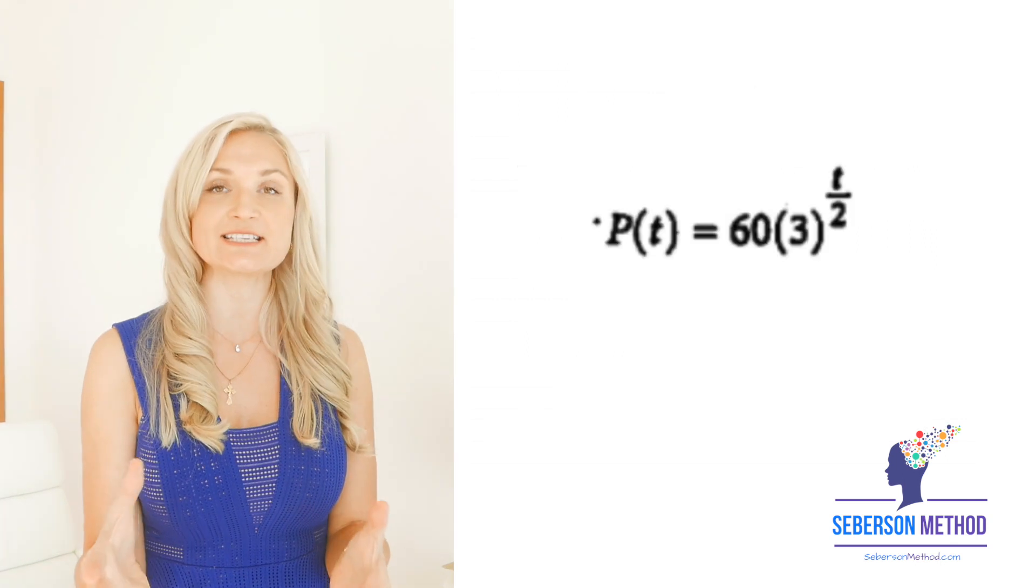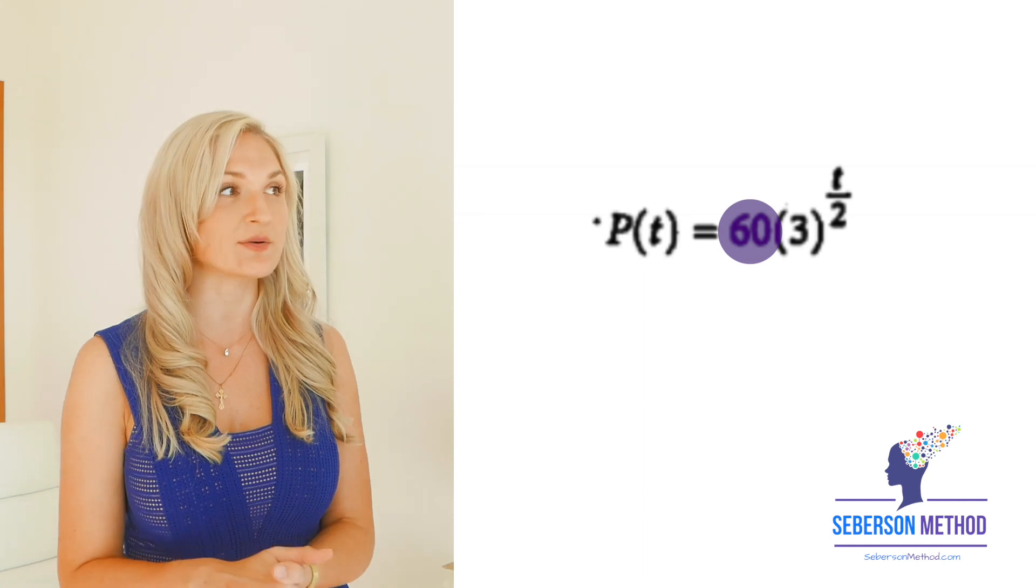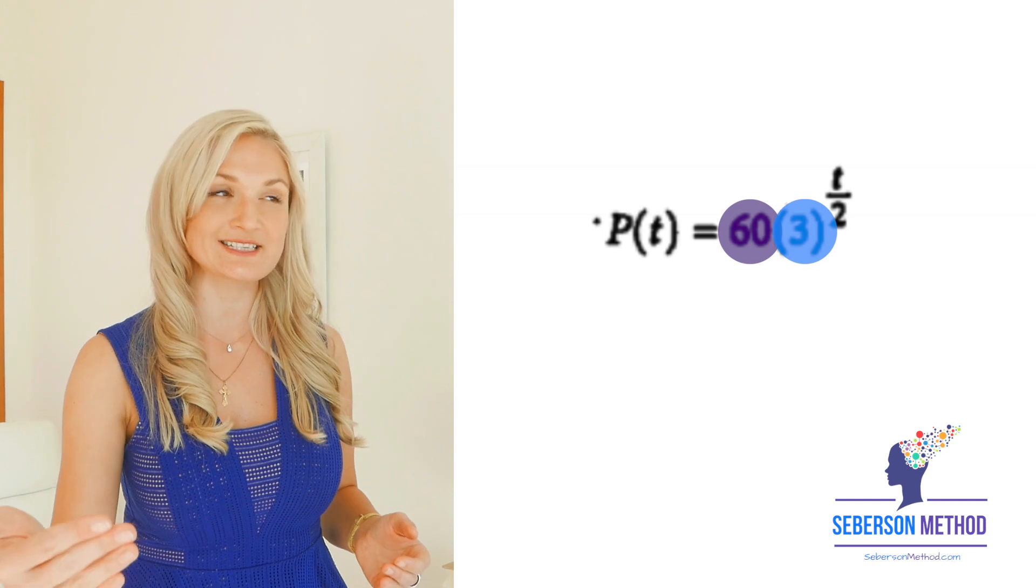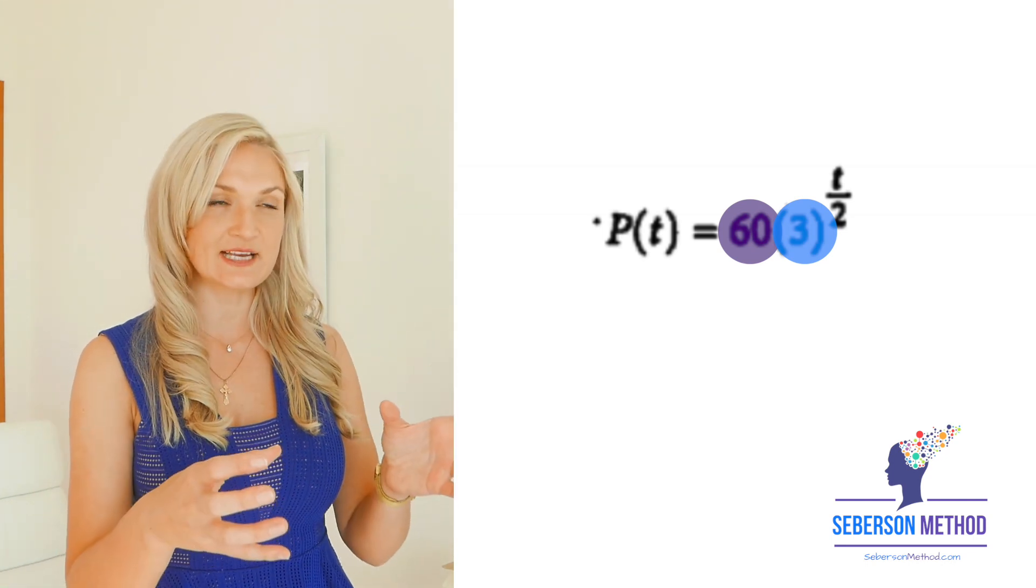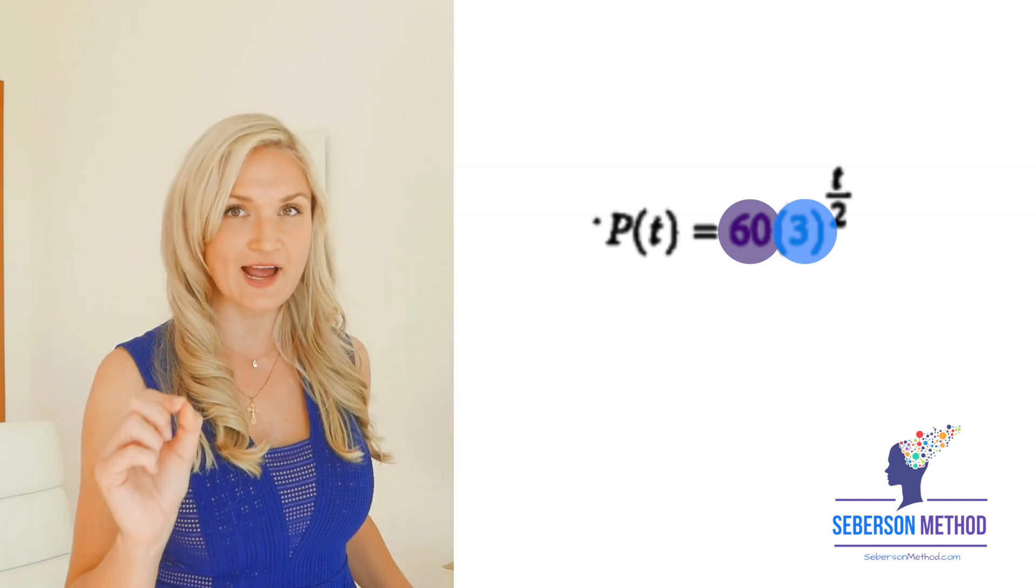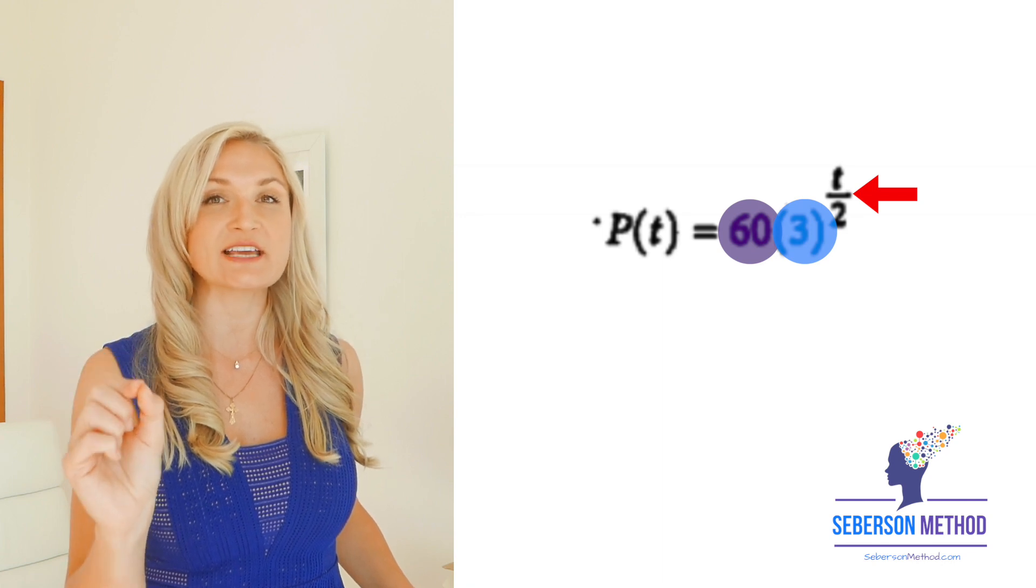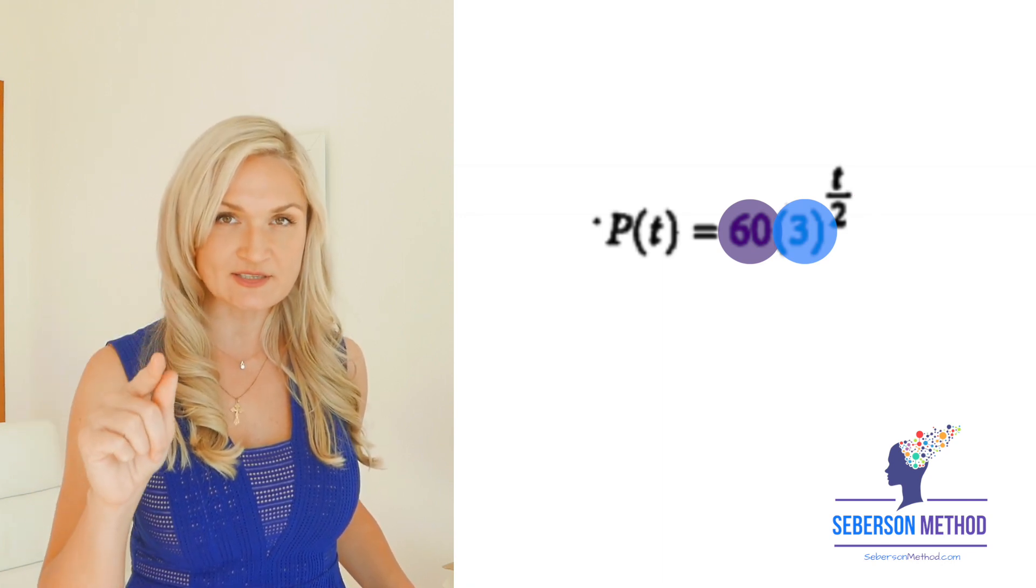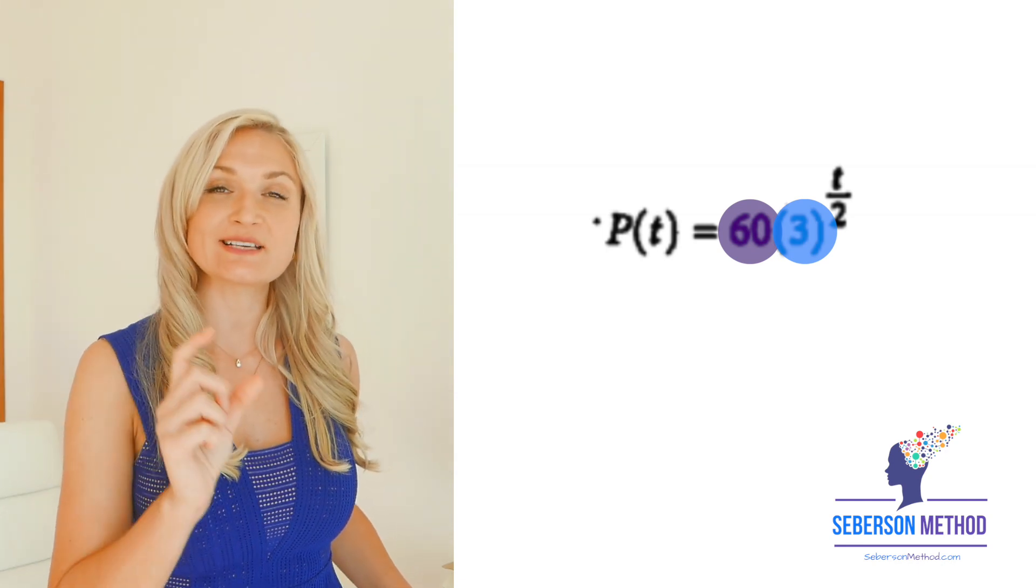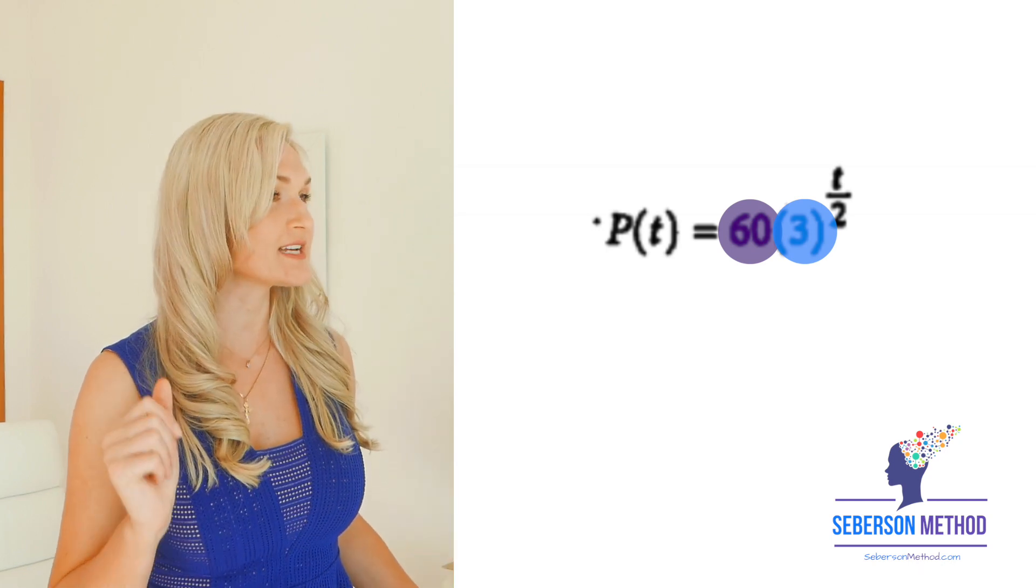And I'm going to try my best to tell the story of this function. So there's 60 of something, because 60 is my A, it's my initial amount. Then my rate is 3. That means I'm tripling it. So I take 60, I triple it. But how often do I triple it? Remember, there's a fraction. So anytime there's a fraction in the exponent, I'm going to say the word every, then I'm going to go into the denominator, two days. So something gets tripled every two days. Now, let's take a look at the question.